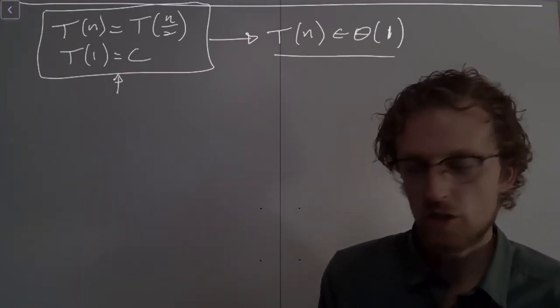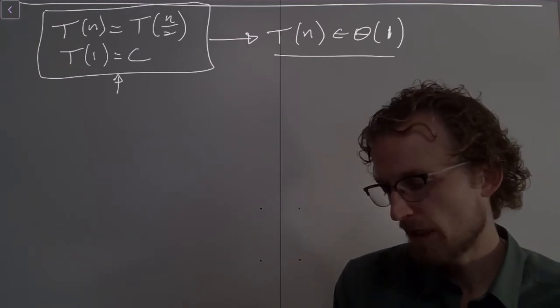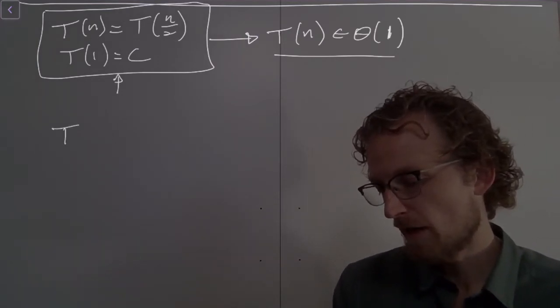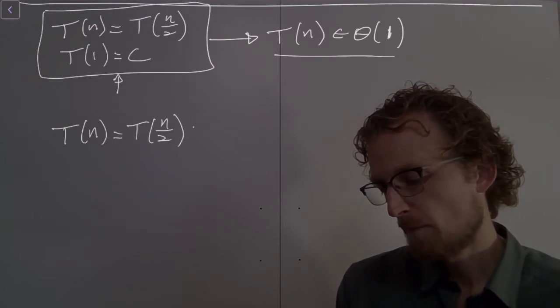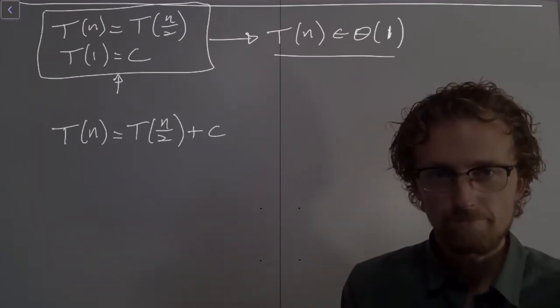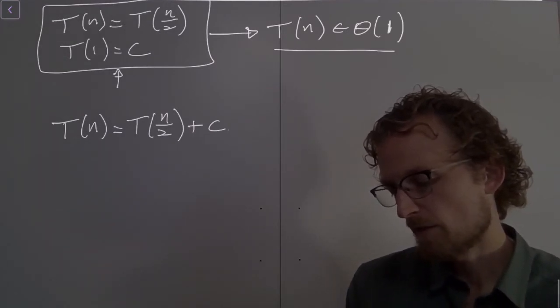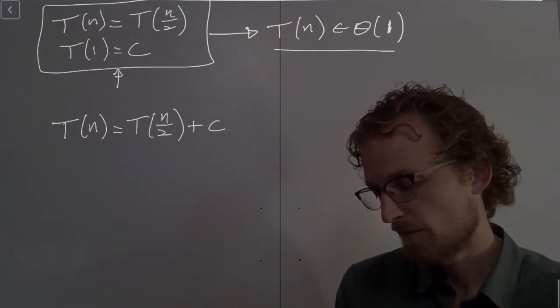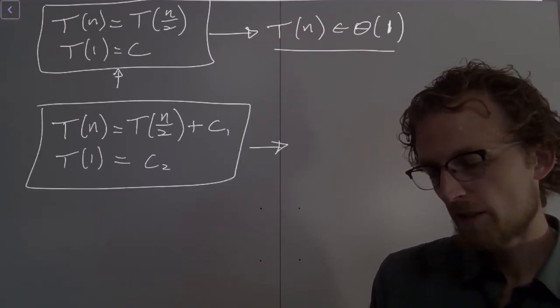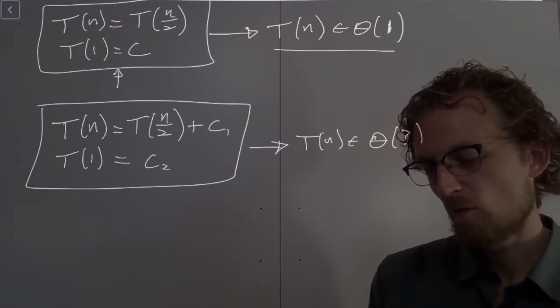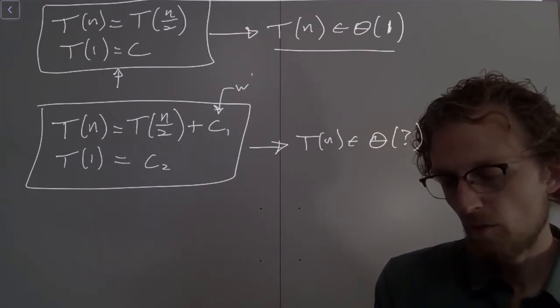So now let's change this just a little bit. Let's add just a tiny bit of nuance and see what that changes. So instead of the first recurrence relation we analyzed, let's analyze this one: T of n over 2 plus C. And I'll call that C1 so that I can anchor this thing at C2. So here's a new recurrence relation. We want to ask, this gives us T of n big theta of what? What's the effect of adding a tiny constant here? Basically, what does this do?